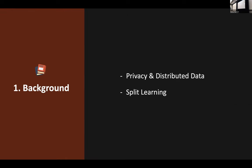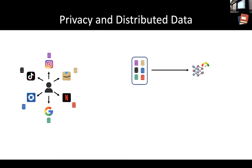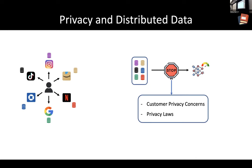We are reliant on a growing number of apps and services to carry out different tasks related to various aspects of our lives. As a consequence, our data is being stored in a distributed fashion across different companies. While aggregating this data would enable companies to train powerful new machine learning models, doing so is not always possible. The key reason is privacy concerns, which can arise either directly from customer needs or from privacy laws made by governments.